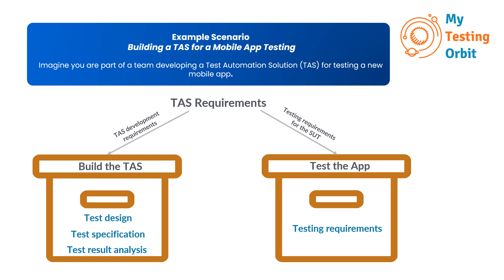So why do we split our requirements into these two groups? The 'build the TAS' box helps us to create a great testing tool — we need to know how the TAS should work internally so it's effective. The 'test the app' box is important because it tells us how to use our TAS to test the mobile app correctly. In our scenario, the first box helps us make the TAS and the second box helps us use it effectively to test our mobile application.